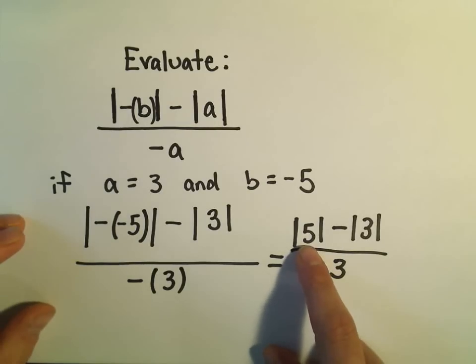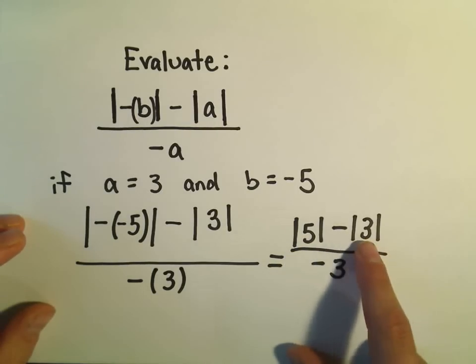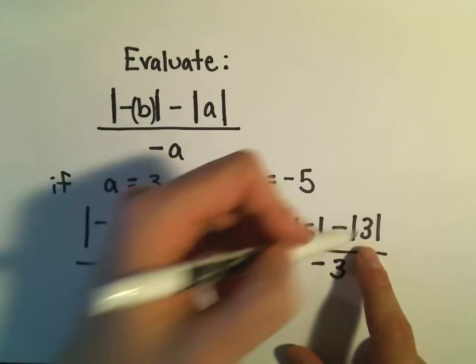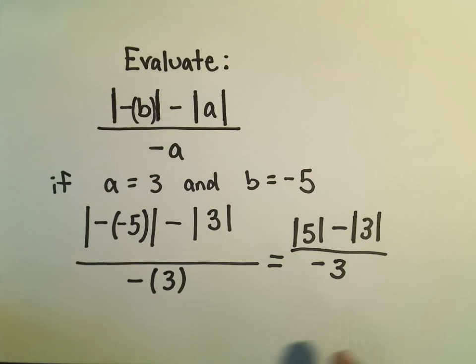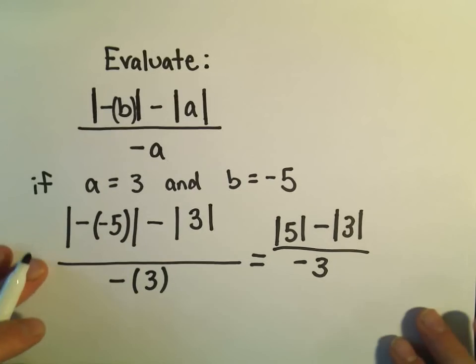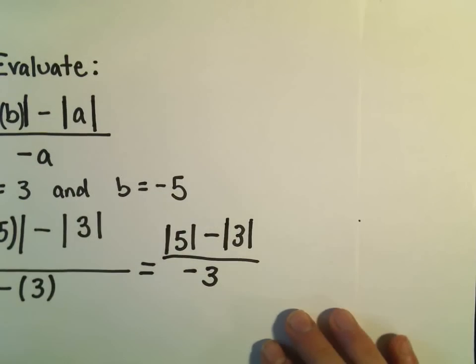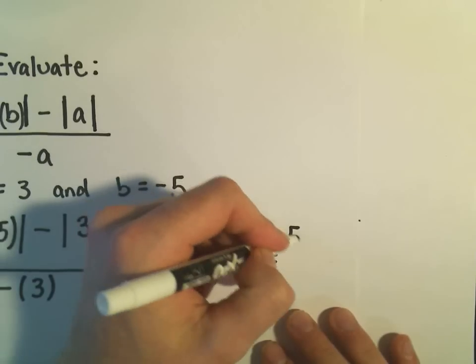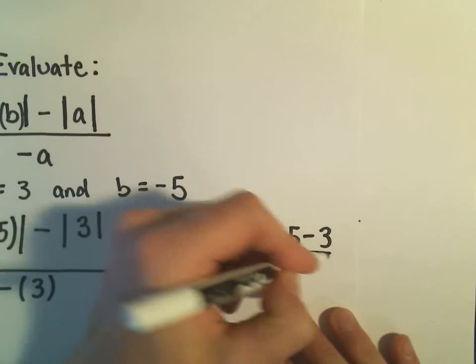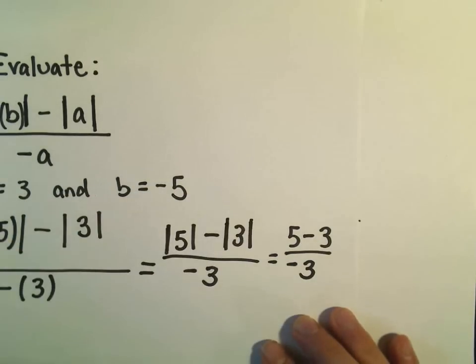Well, the absolute value of positive 5 is 5. The absolute value of positive 3 is 3. So in the numerator, we're really getting the value 5 minus 3. Again, still over negative 3.